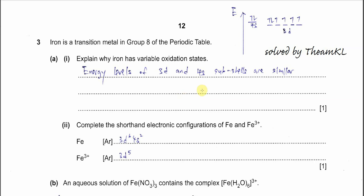Question 3. This question is about transition metals, mostly focused on the iron-related complex ion. Part A, part 1: explain why iron has a variable oxidation state.